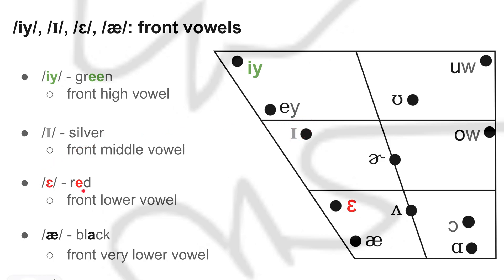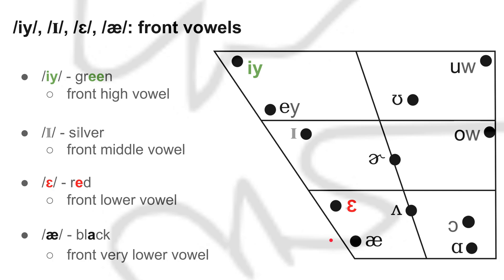E as in 'red' is a front lower vowel — it's not low, it's a front lower vowel, mid-lower. When I say 'red,' E, my tongue is in the mid-low and in the front. And E as in 'black' is a front very lower vowel — basically the lowest front vowel. When I say E as in 'black,' my tongue is at the bottom and the front of my mouth.